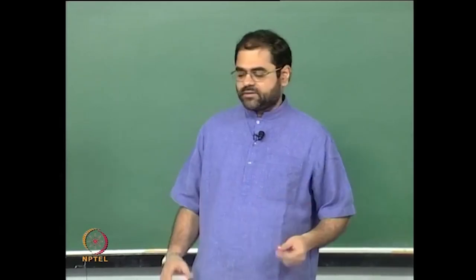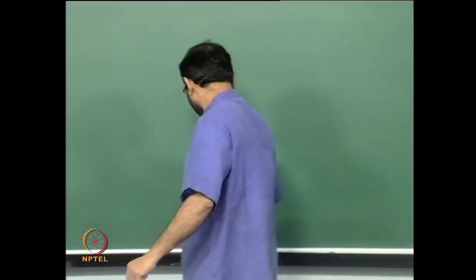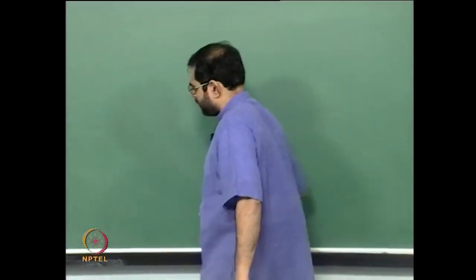Somehow these two are related, in the sense that the dimension of, for example, affine n-space — the topological dimension of affine n-space — is the same as the Krull dimension of the ring of functions on affine n-space. So let me recall again, to refresh your memory and so that you feel comfortable, let me recall what was going on.